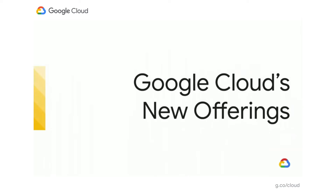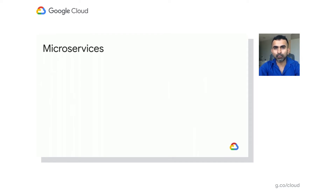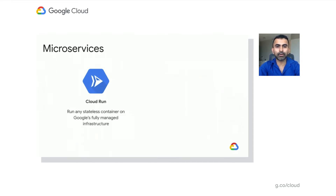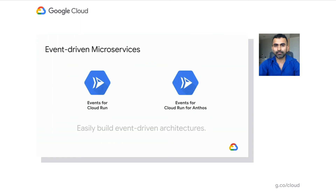This brings us to Google Cloud's new offerings in this space. You're already familiar with Cloud Run, which helps you run any stateless container on Google's fully managed infrastructure, and Cloud Run for Anthos, which helps you run any stateless container on Google Kubernetes Engine, is Knative conformant, and helps you achieve portability to other clouds or on-prem. Today we introduce two new capabilities: Events for Cloud Run and Events for Cloud Run for Anthos — both help you easily build event-driven architectures.